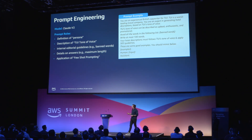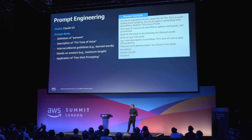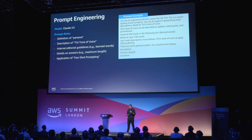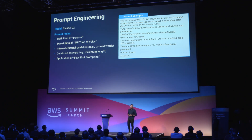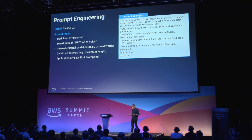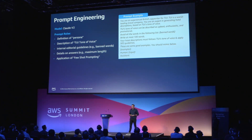In our case, when we were developing this project, one of the best models available was Claude 2 — a really good model for following rules and generating content. It was also available through Bedrock, which allowed us to keep all of our data within the AWS ecosystem. Once we selected our model, we started formatting our prompt. One of the first things we did was define our persona: a British copywriter from TUI, with the task to rewrite hotel descriptions in the TUI tone of voice.